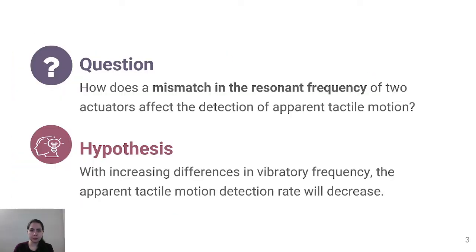In this work, we want to know how a mismatch in resonance frequency of two actuators affects the detection of apparent tactile motion. We hypothesized that the detection rate of apparent tactile motion would decrease as the difference in vibration frequency increases.